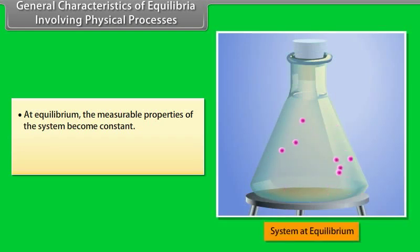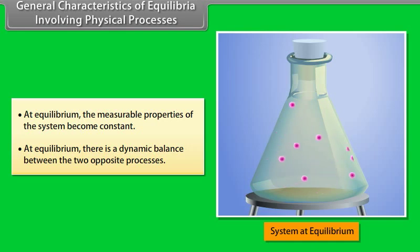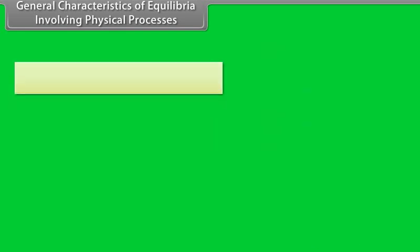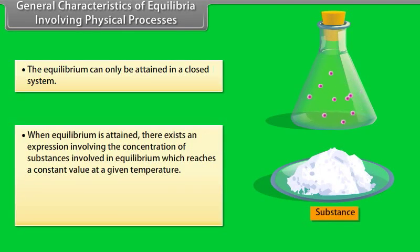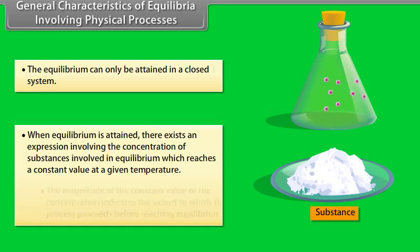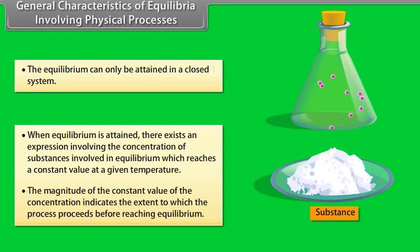General characteristics of equilibria involving physical processes: At equilibrium, the measurable properties of the system become constant. There is a dynamic balance between the two opposite processes. Equilibrium can only be attained in a closed system. When equilibrium is attained, an expression involving the concentrations of substances reaches a constant value at a given temperature. The magnitude of this constant indicates the extent to which the process proceeds before reaching equilibrium.